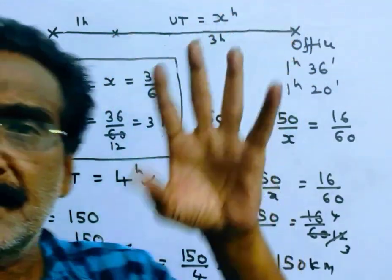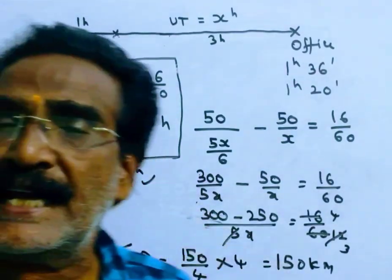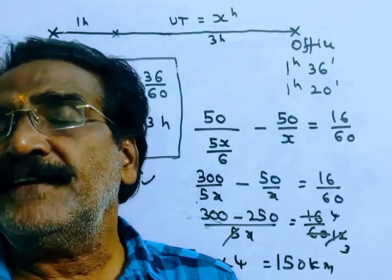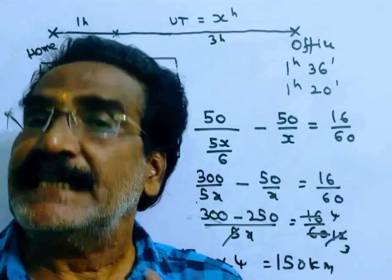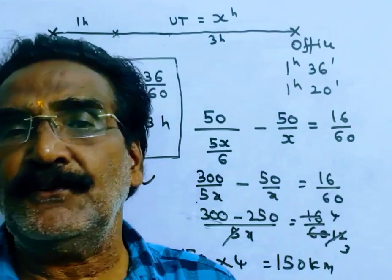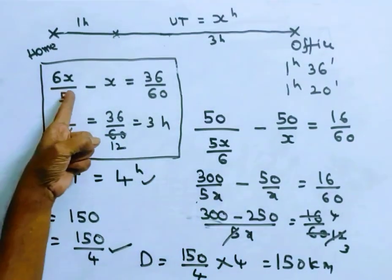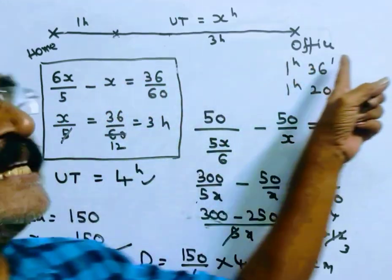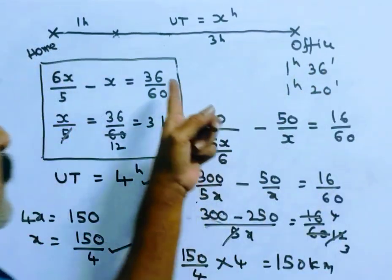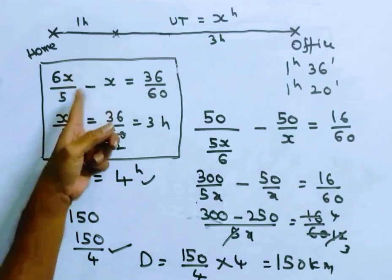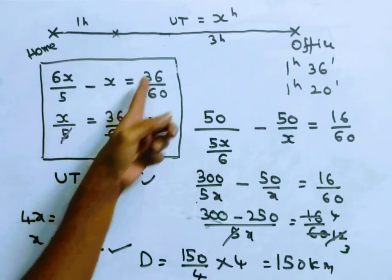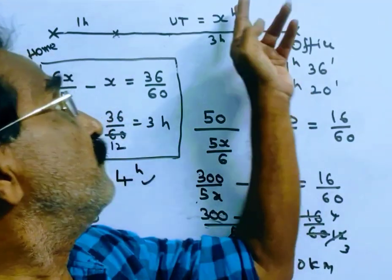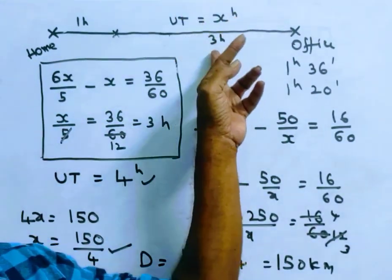Let the usual time from the accident point to the office be x hours. After the accident he travels at five-sixths of his usual speed, so he takes six-fifths of the usual time. The difference — six-fifths x minus x — equals x over five, and this equals thirty-six minutes, i.e., 36/60 hours. Solving: x/5 = 36/60, so x = 3 hours.